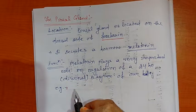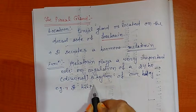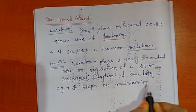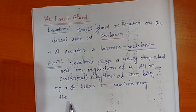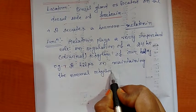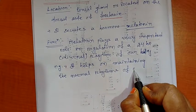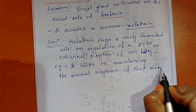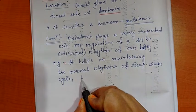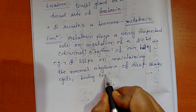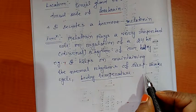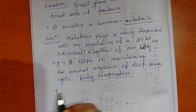For example, it helps in maintaining the normal rhythms of sleep-wake cycle and body temperature. It controls the diurnal rhythm or sleep-wake cycle and body temperature. In addition to this, its another function is melatonin.